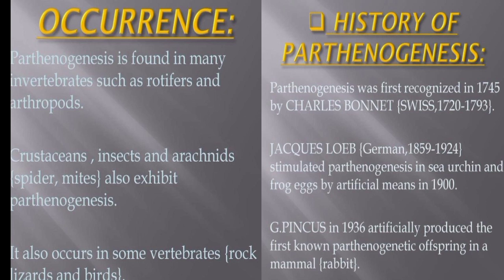The history of parthenogenesis: Parthenogenesis was first recognized in 1745 by Charles Bonnet. J.K.S. Loeb stimulated parthenogenesis in sea urchin and frog eggs by artificial means. G. Pincus in 1936 artificially produced the first non-parthenogenesis offspring in mammals — in rabbits.